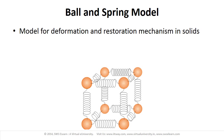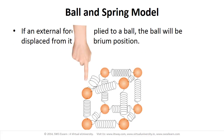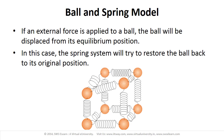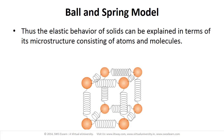The deformation and restoration mechanism based on molecules in solids can be explained very nicely in terms of a simple model consisting of springs and balls. Here, balls represent molecules and springs represent intermolecular forces. If an external force is applied to a ball, the ball will be displaced from its equilibrium position. The spring system will then try to restore the ball back to its original position. Thus, the elastic behavior of solids can be explained in terms of its microstructure consisting of atoms and molecules.